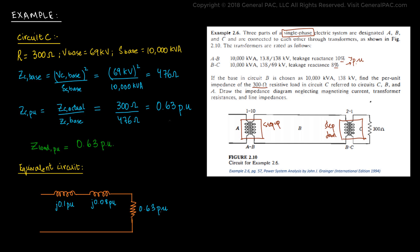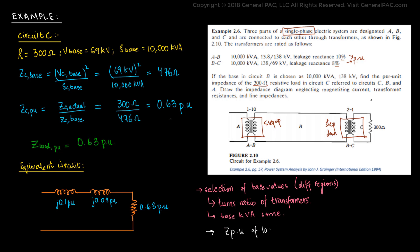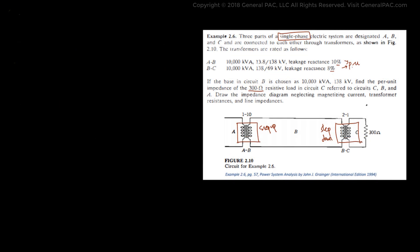Despite already solving part of the answer, we will go through and show the advantages of per unit systems. Because the selection of the base in various regions is determined by the turns ratio of the transformer, and because the base kVA is the same in all regions, the per unit impedance of the load transferred to any region of the system will be exactly the same. This will be illustrated in the remaining parts of this tutorial. We know the per unit impedance in circuit B will equal that in circuit C, i.e., 0.63 per unit, as described in Part 2c.